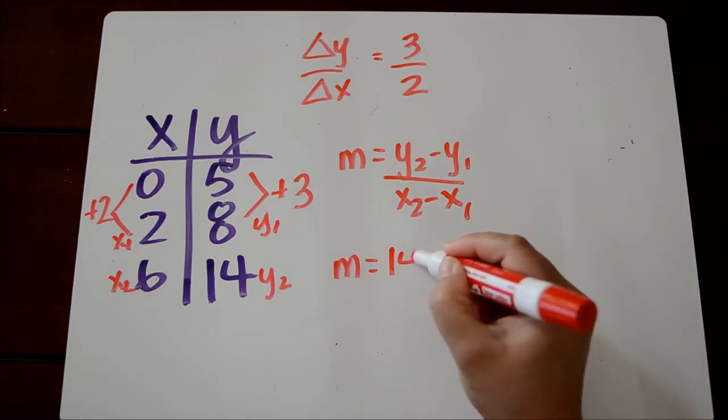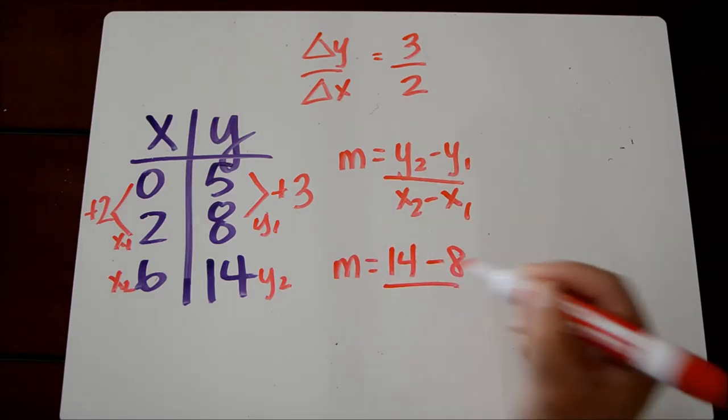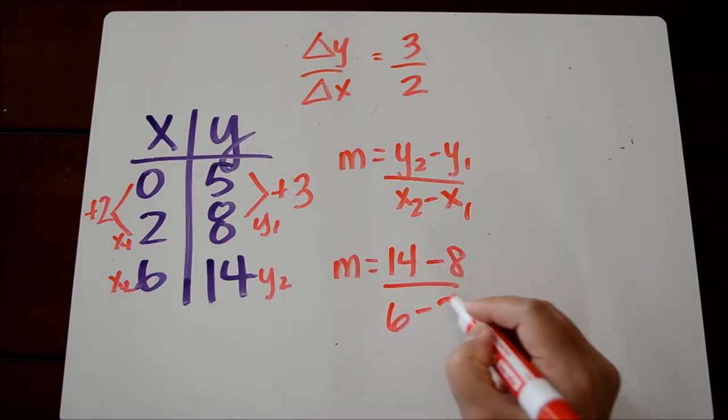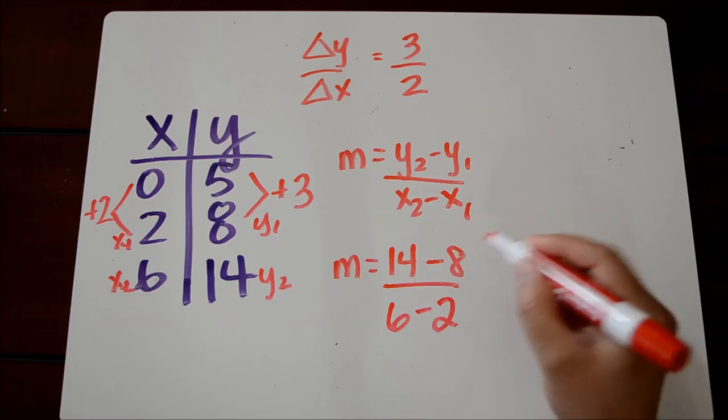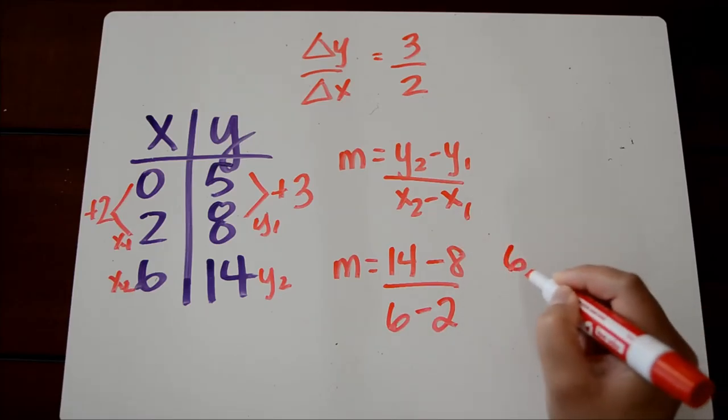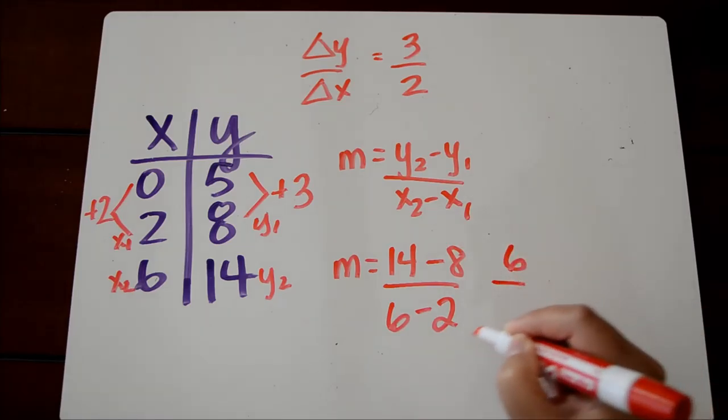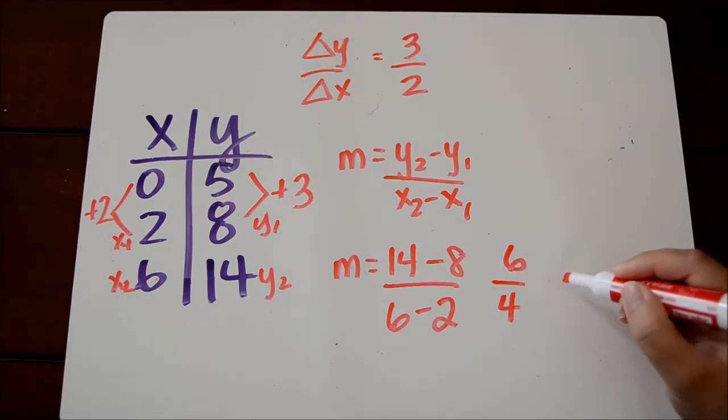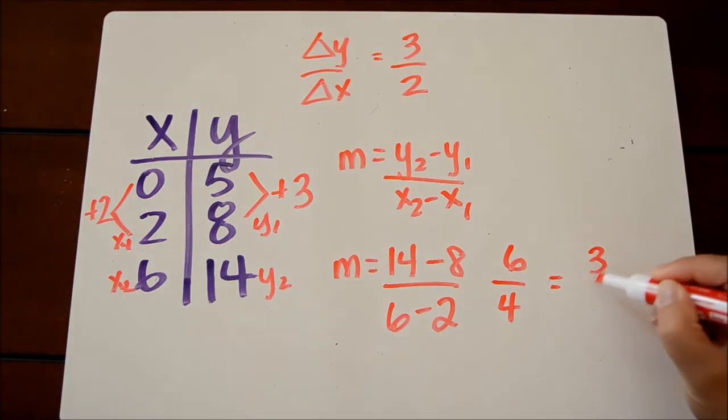So y2 minus y1 is 14 minus 8. And then x2 minus x1, that's going to be 6 minus 2. 14 minus 8 is 6, 6 minus 2 is 4. And 6 over 4 can be reduced to 3 over 2.